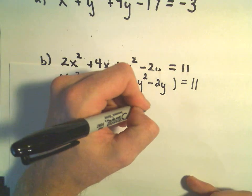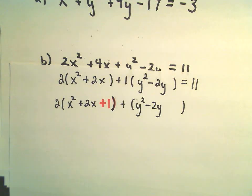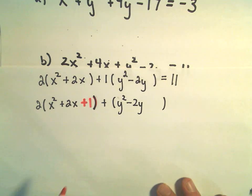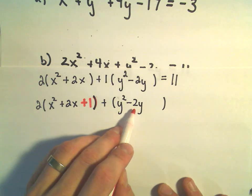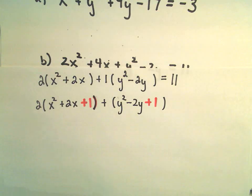Then we have y squared minus 2y. Same thing, if I take 1 half of negative 2, I'm going to get negative 1. Negative 1 squared is positive 1.